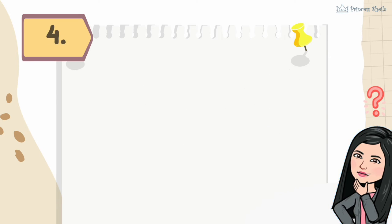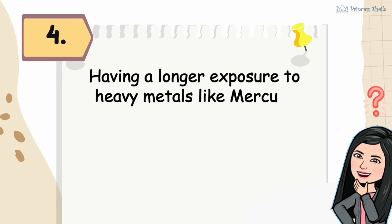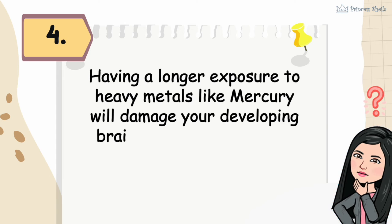Four: having a longer exposure to heavy metals like mercury will damage your developing brain and nervous system.